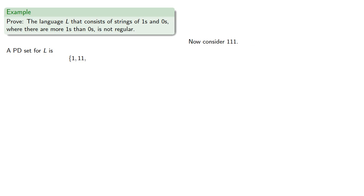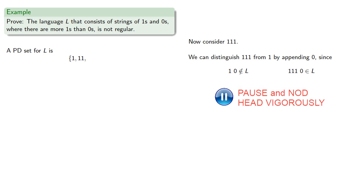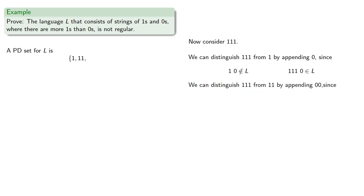Now consider 111. We can distinguish 111 from 1 by appending 00, since 100 is not in our language but 11100 is. We can also distinguish 111 from 11 by appending 00, since 1100 is not in our language but 11100 is. So 111 is also in our pairwise distinguishable set.